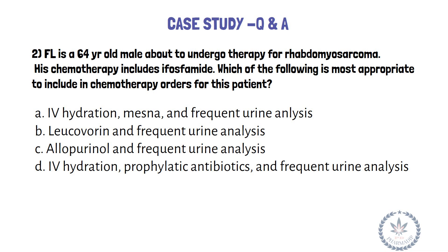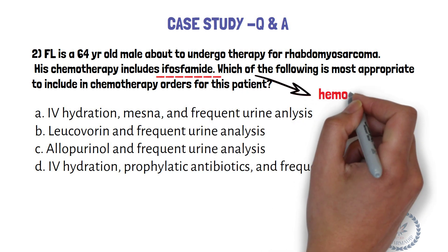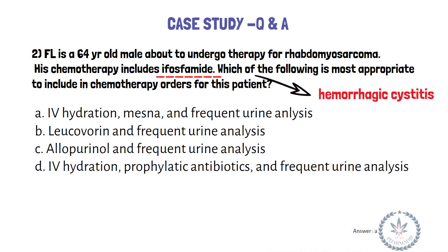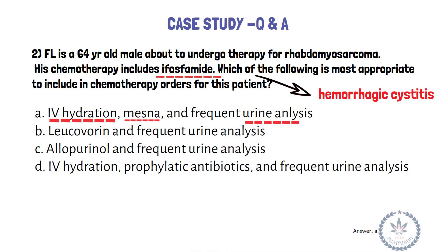Look for the adverse effect of the drug and possible management options. The answer is option A. A unique toxicity of ifosfamide is hemorrhagic cystitis. This bladder toxicity has been attributed to toxic metabolites of ifosfamide. Adequate hydration as well as IV injection of mesna — that is sodium 2-mercaptoethane sulfonate — which neutralizes the toxic metabolites, can minimize this problem. Frequent urinalysis to monitor for red blood cells should be ordered. Leucovorin is used with methotrexate or 5-fluorouracil, not ifosfamide. Allopurinol has a drug interaction with ifosfamide and is not an agent that prevents hemorrhagic cystitis. Prophylactic antibiotics are not needed.